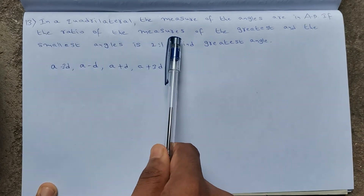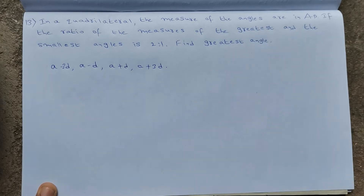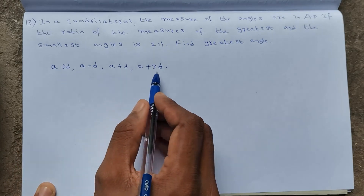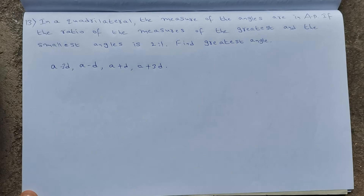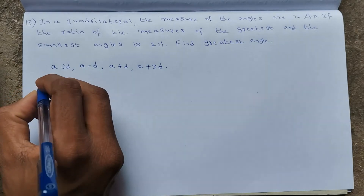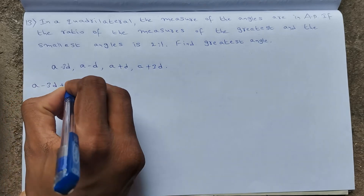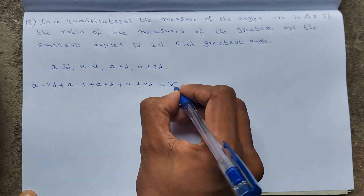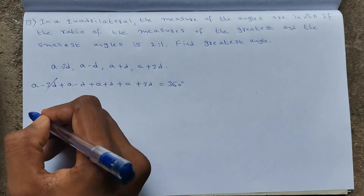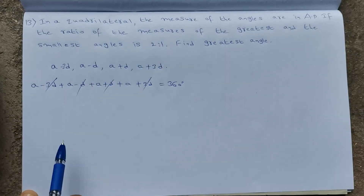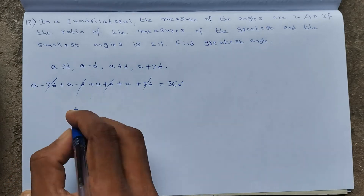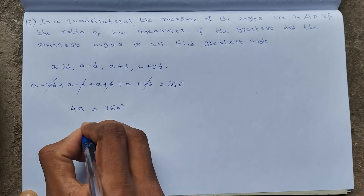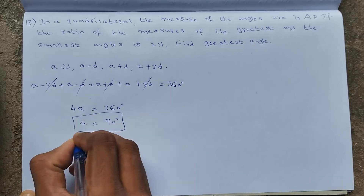The ratio of the greatest to the smallest angle is 2:1. First, the sum of all angles in a quadrilateral is 360°. Adding: (A − 3D) + (A − D) + (A + D) + (A + 3D) = 360°. The D terms cancel, giving 4A = 360°, so A = 90°.